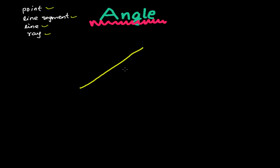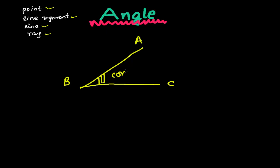So what is an angle? It's quite simple. Suppose I have a line segment — let's call it AB — and another line segment CB, or you can say BC. When these two line segments intersect, they make a corner at the point of intersection.